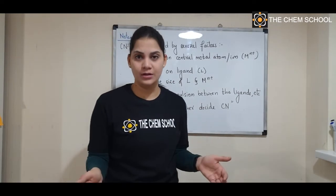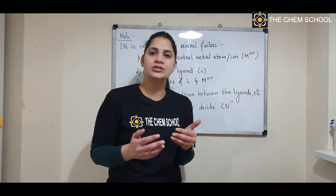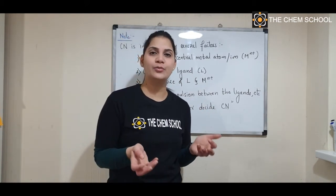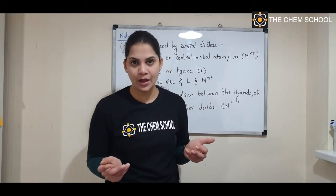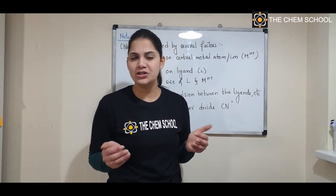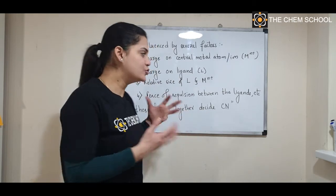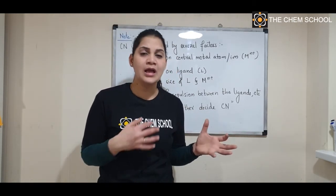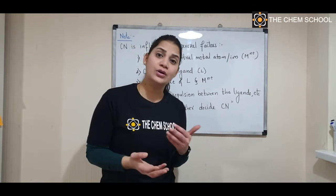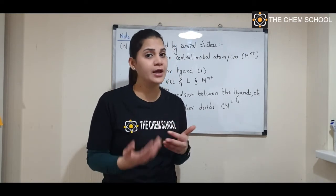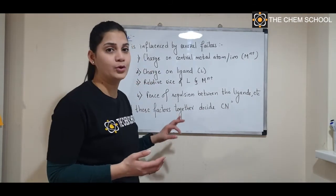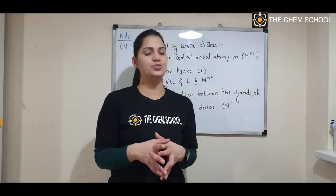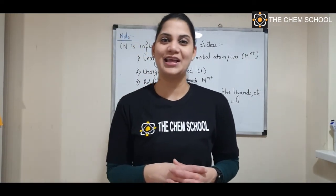Many metals can exhibit multiple coordination numbers. Iron usually shows a coordination number of six but can show four, which is less stable. Platinum can show a coordination number of four, but the stable one is again six. Cobalt usually shows six but can show a different coordination number. All these factors together are important for deciding the coordination number. That's all for today's lecture — see you soon in the next class.